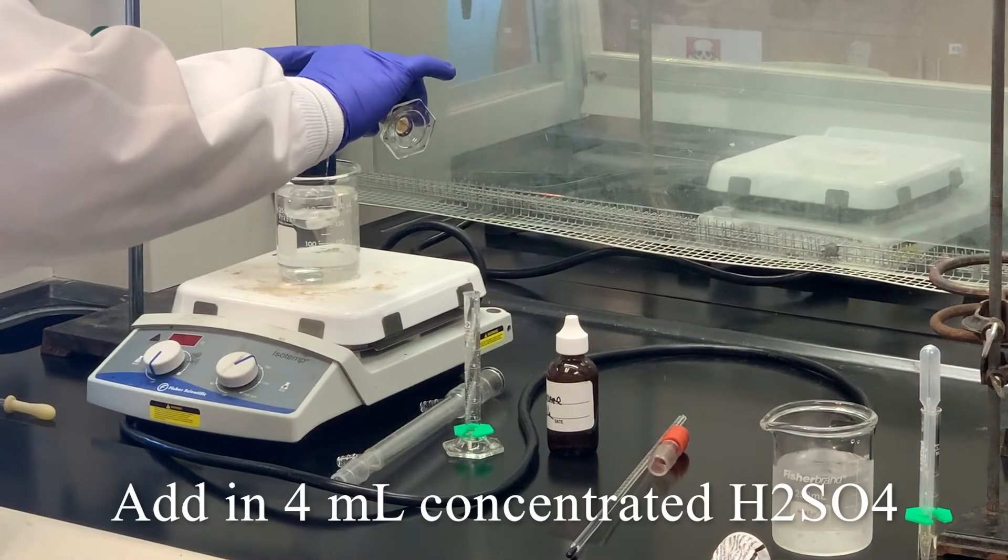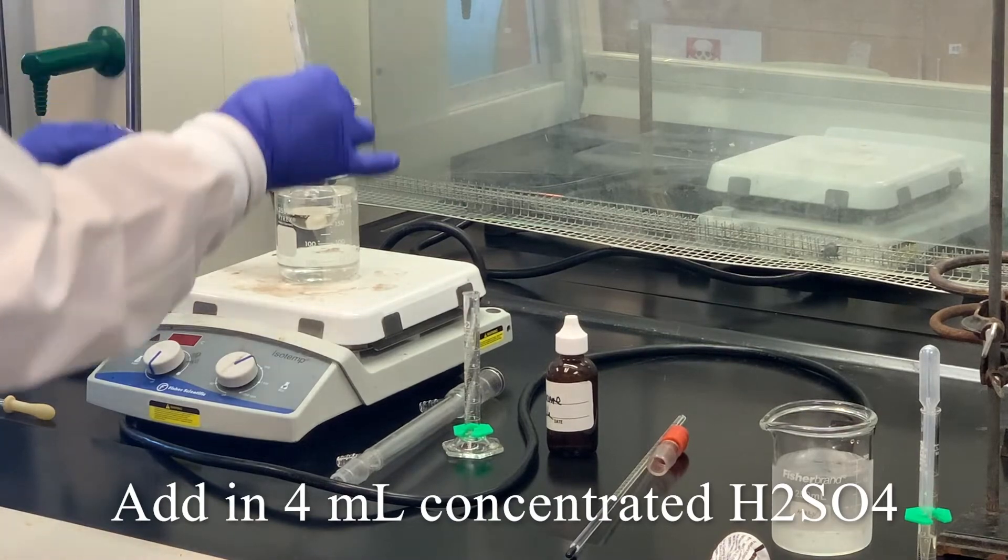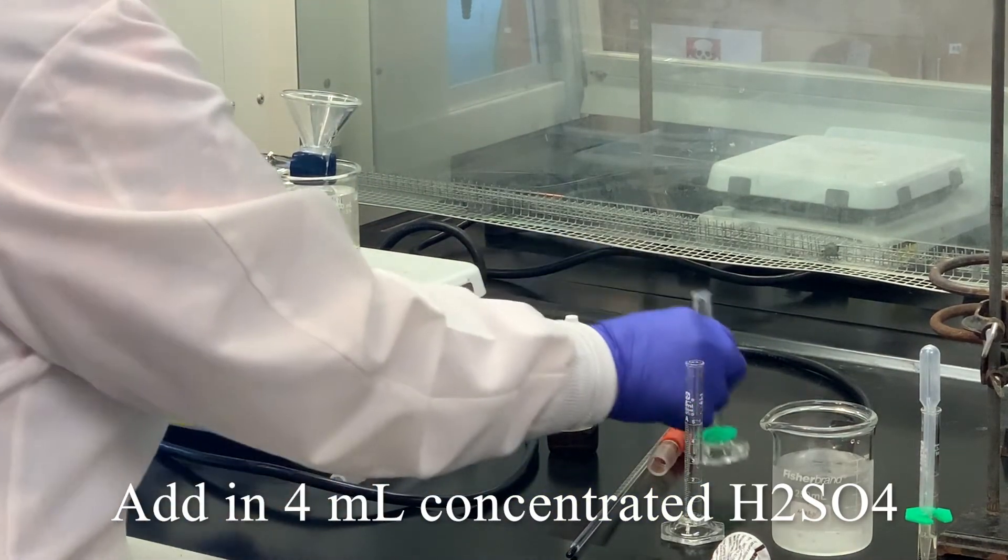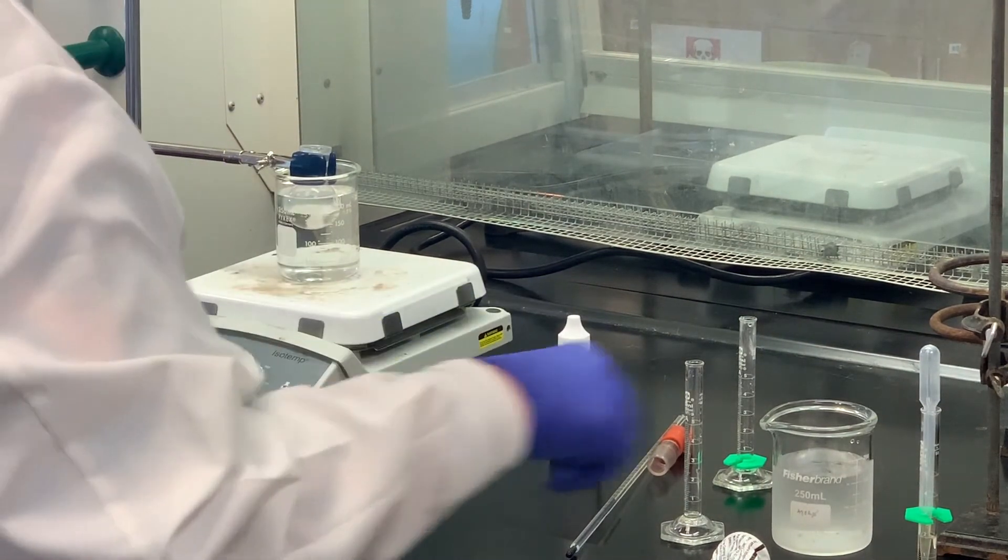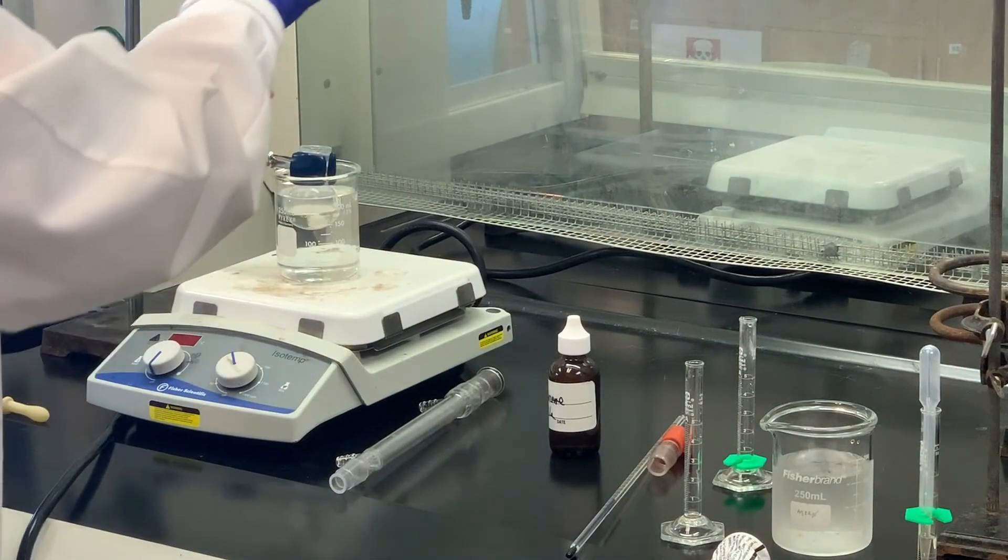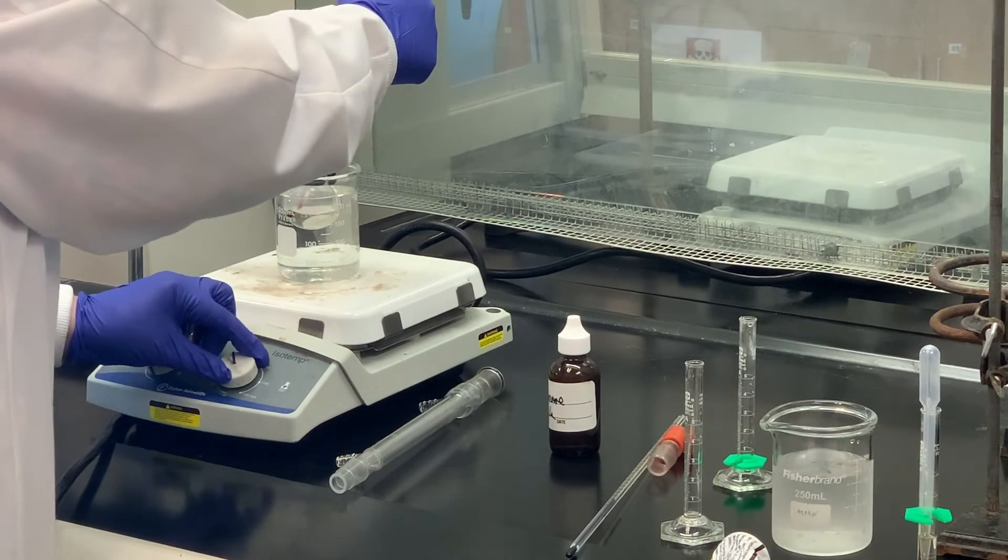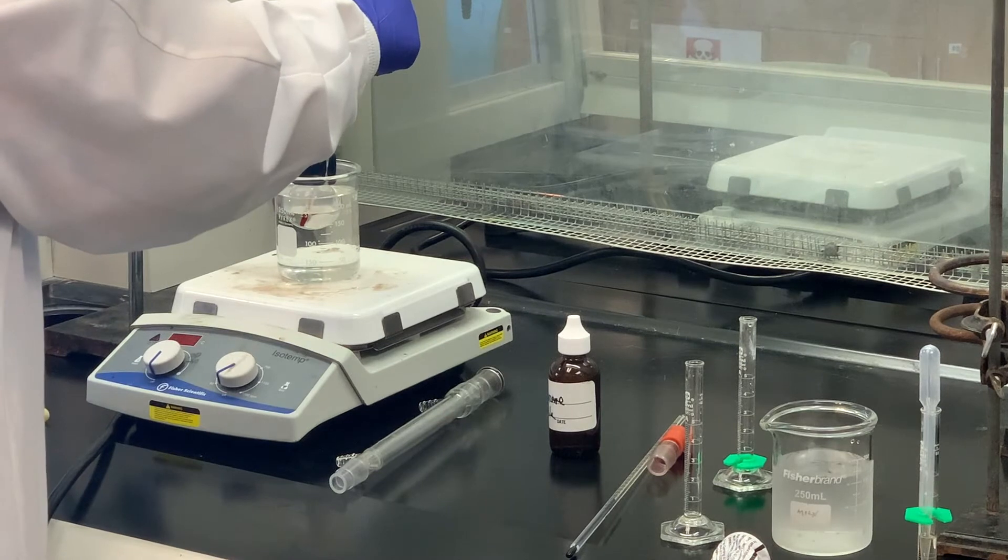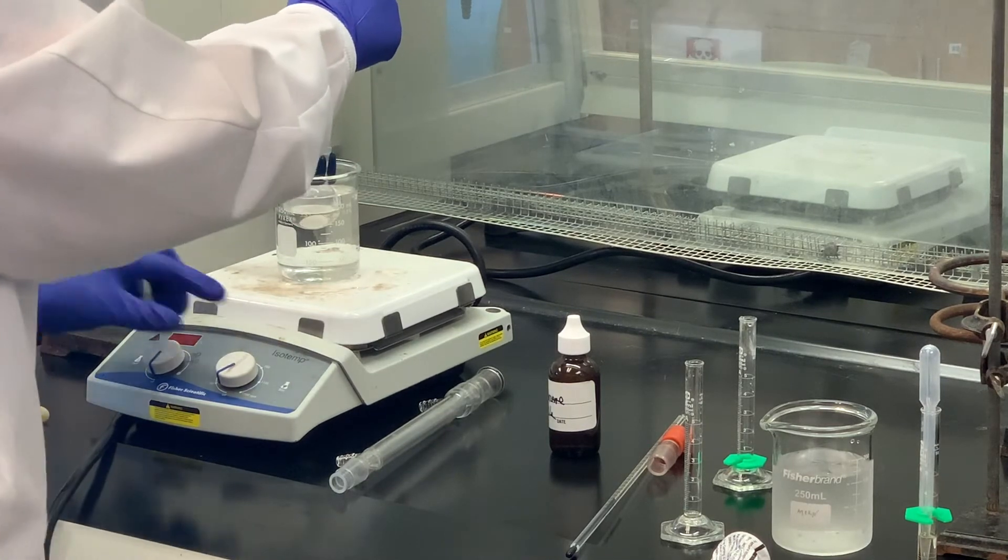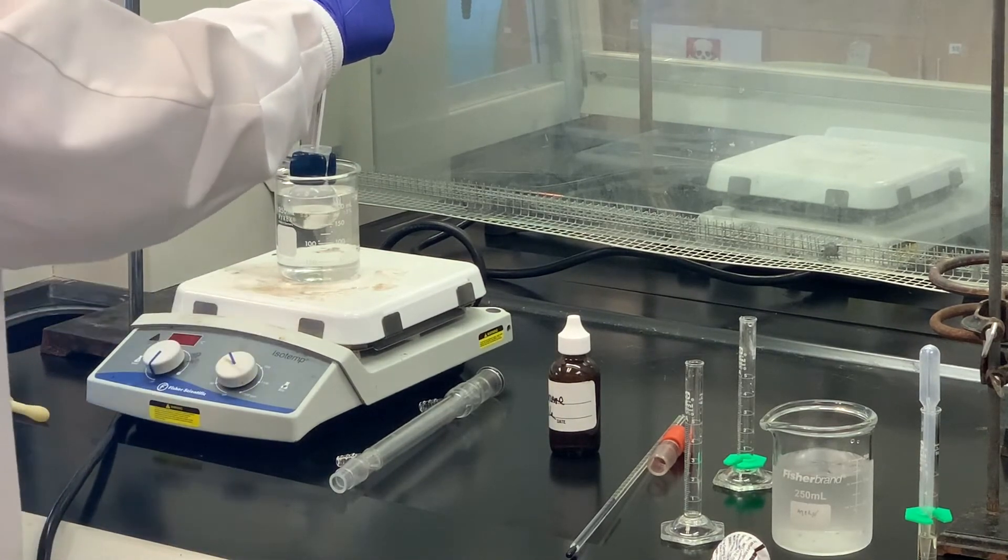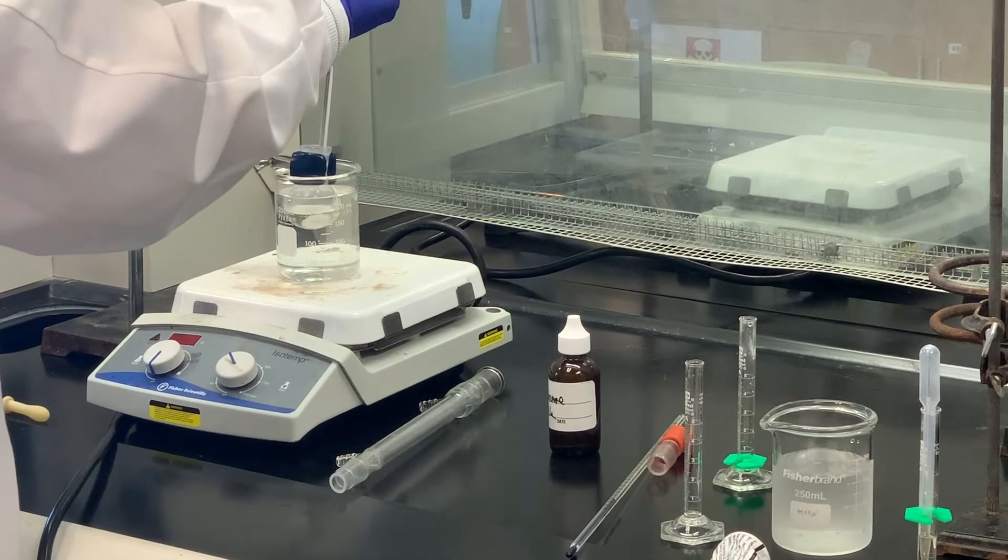Next, I'm going to add the four milliliters of concentrated sulfuric acid. And then I'm going to stir this just to mix it well. I'm going to take a measure of the temperature inside just to see if it has increased. I'm going to stop stirring just so I can get it in there a little bit better. It looks like it's around 40 degrees, close to 40. I'm just going to let that stir. We probably want it closer to 25 before we start. I'll let that stir for a while and recheck it in a couple minutes.